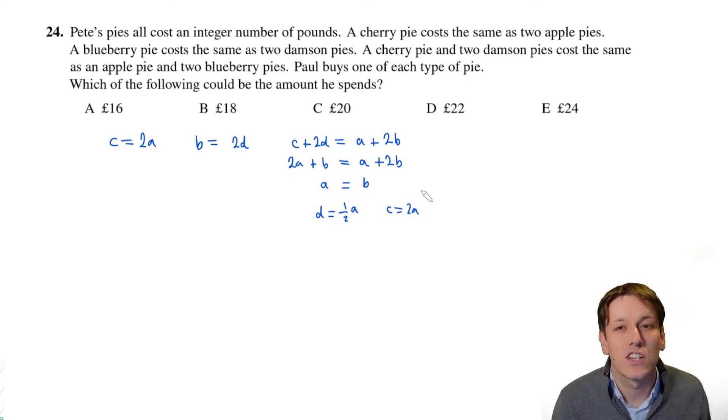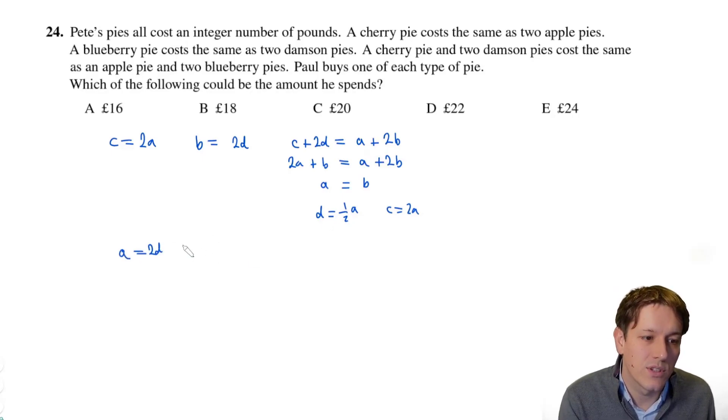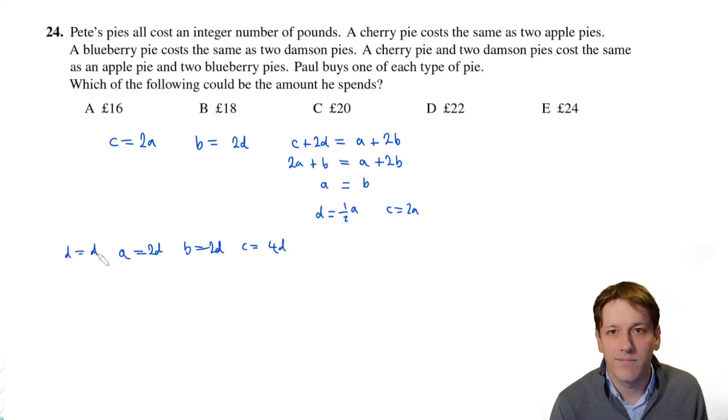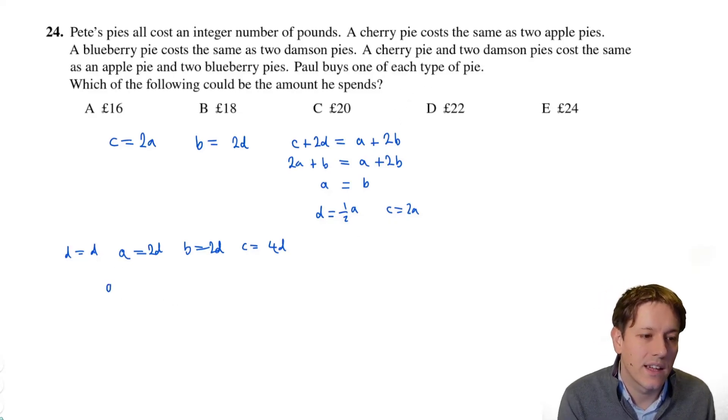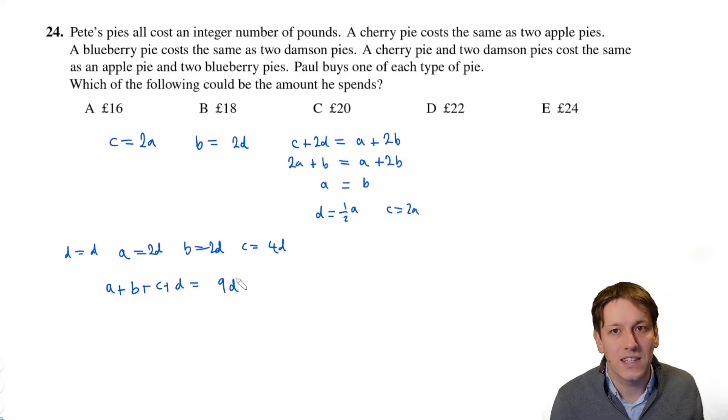Now all of the pies have to be an integer number of pounds here, so it makes sense to write everything in terms of the smallest one. So that would be D here. So I've got A is going to be equal to 2 lots of D, B is also 2 lots of D, and C is 2 lots of A, which is 4D. And then of course I've just got D is D. And so if we get one of each type of pie, then we're looking for A plus B plus C plus D, well that'll be 2D plus 2D plus 4D plus D, that gives us 9D.